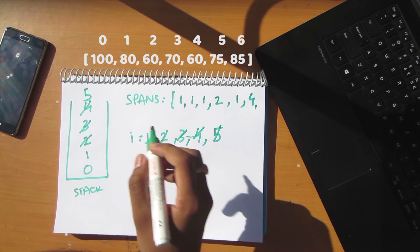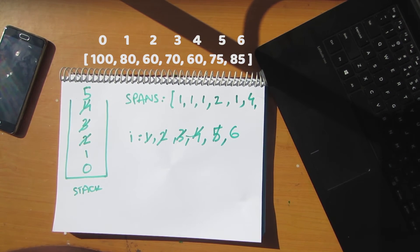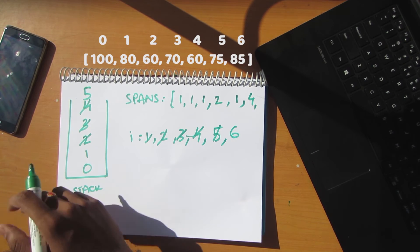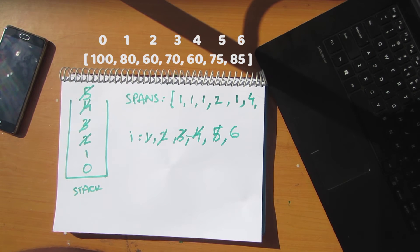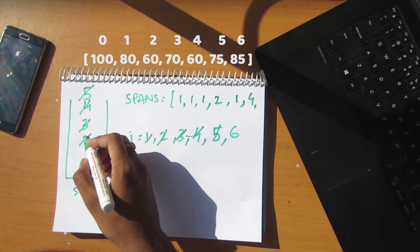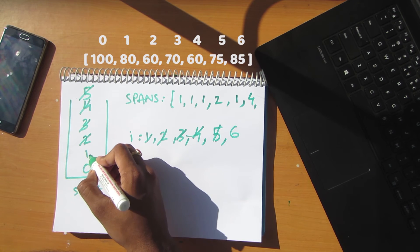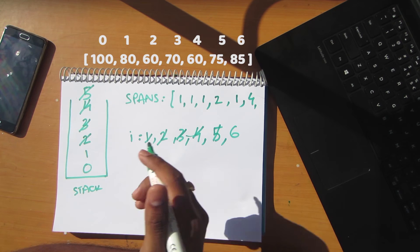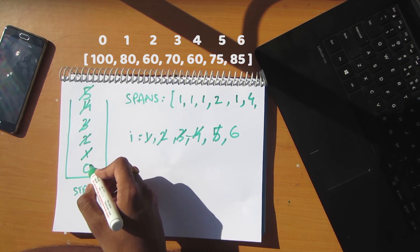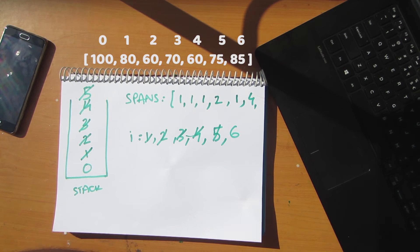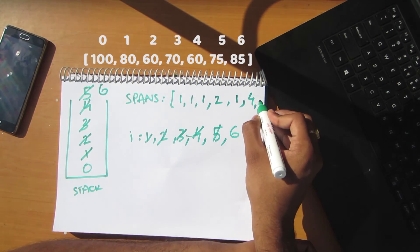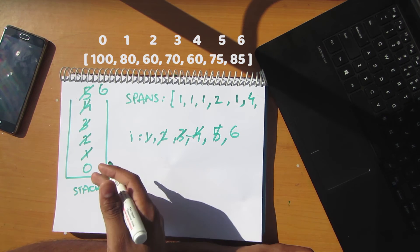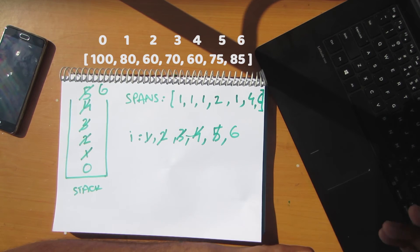We push index 5 onto the stack and increment to the last element, index 6, which is 85. The top is index 5, which is 75 — 85 is greater, so 75 gets popped. Then index 1, which is 80 — 85 is greater than 80, so 80 gets popped. Now checking the 0th element, which is 100 — is 85 greater than 100? No, so we exit the loop. The difference is 6 minus 0 equals 6. That is how we find the spans for each stock price.